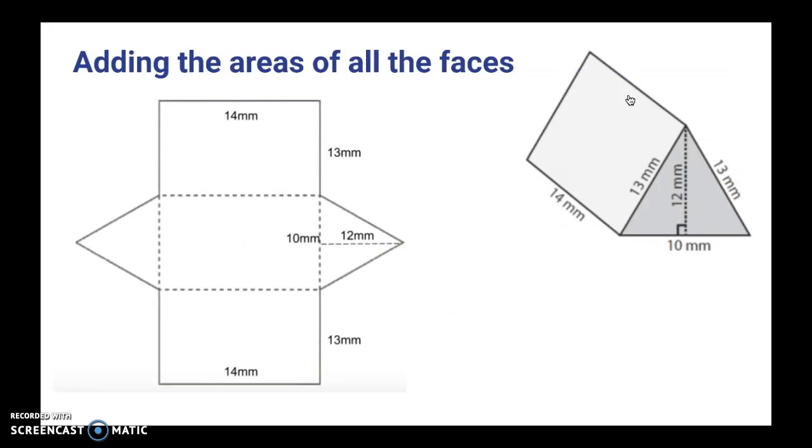Alright, so with the first method, adding the areas of all the faces. I started out with the rectangles and we have a 14 by 13, which is an area of 182 square millimeters. And another one that matches that exactly. Then we're going to see the other rectangle is slightly different. It's a 10 by 14, so it has an area of 144 square millimeters.